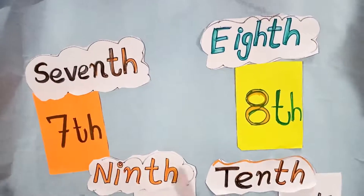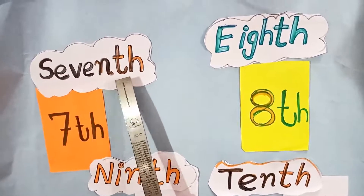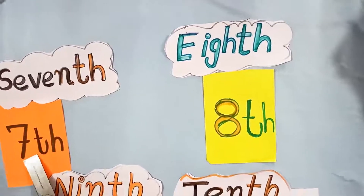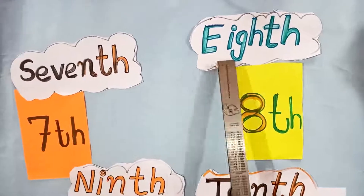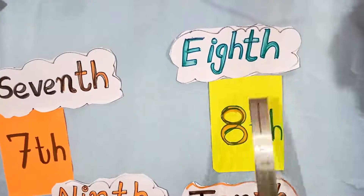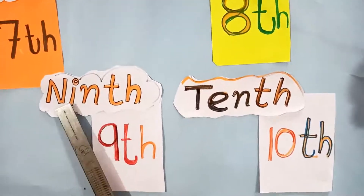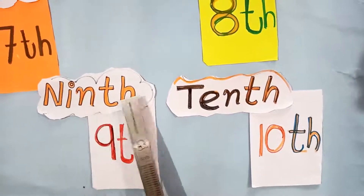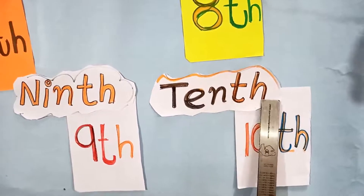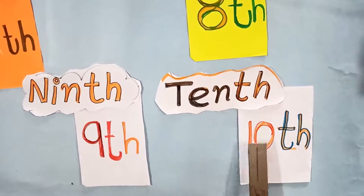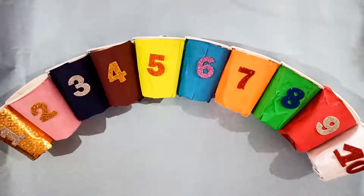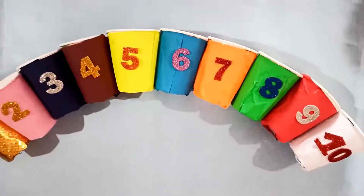Next is seventh. S-E-V-E-N, seven. And with that, add T-H. S-E-V-E-N-T-H. In number, it is 7-T-H, seventh. Next ordinal number is eighth. E-I-G-H-T-H, eighth. Next one is ninth. N-I-N-T-H, ninth. Next one is tenth. T-E-N-T-H, tenth. These are in number: seventh, eighth, ninth, tenth. Ordinal number — we call the position of the number like this.